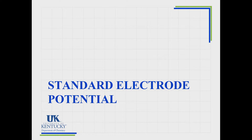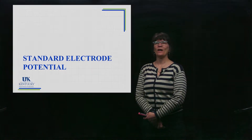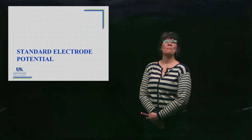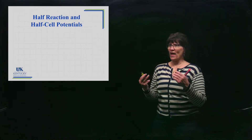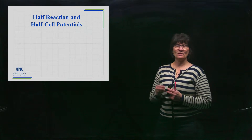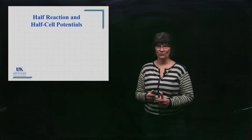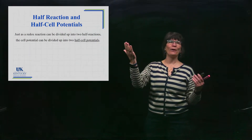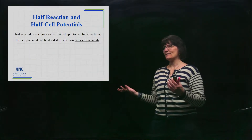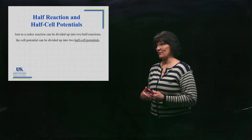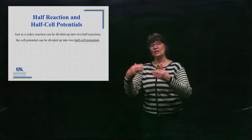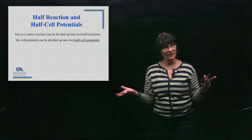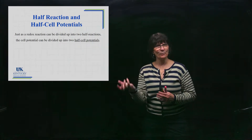Our end game is to come up with cell voltage — cell potential. Before we can talk about a full cell potential, we have to talk about electrode potentials, which are half-cell potentials. A half reaction: you take two half reactions and it gives you the overall reaction. We've practiced writing and balancing half reactions, putting them together. Cell potentials can be divided into two half-cell potentials as well.